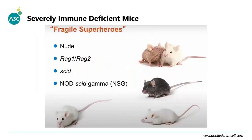Here are some commonly used immunodeficient mouse models, including the Nude, Rag1 and Rag2 knockout mice, as well as SCID mutants, and finally the NOD-SCID IL-2 receptor gamma chain knockout, called NSG mice. This is the mouse model we are focused on today.